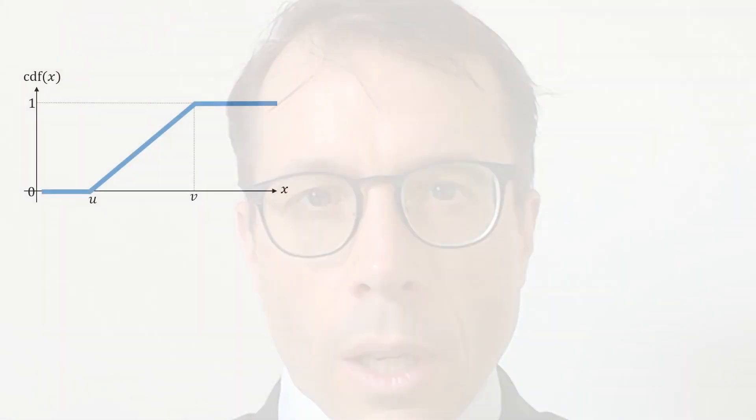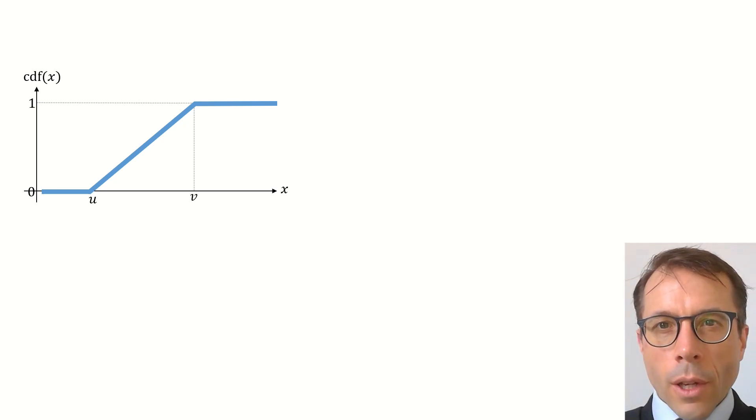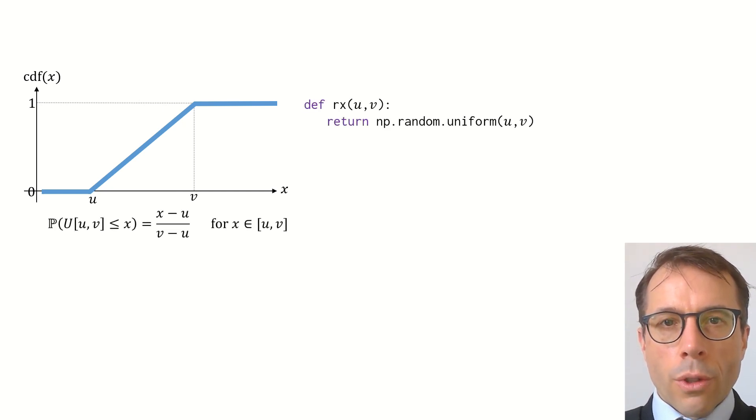Let's work through some examples to build up intuition for the link between custom CDFs and code. Let's start with the simplest possible CDF. When you see this CDF, you should immediately recognise it as a uniform distribution, uniform in the range u to v. This CDF has a constant slope, which means that when you differentiate it with respect to x, you get a constant, which means that the PDF is constant, which means that all values in the range u to v are equally likely. In other words, it's a uniform random variable.